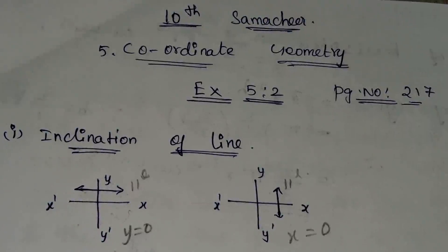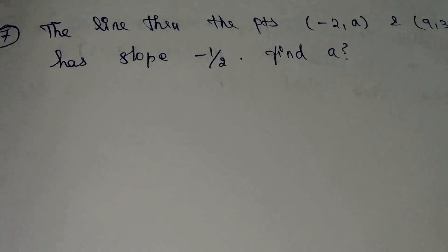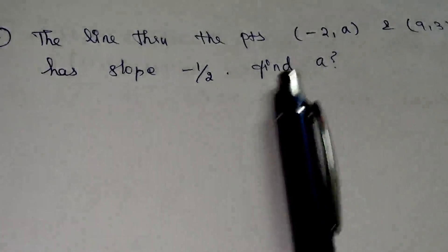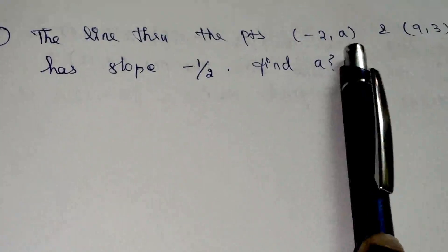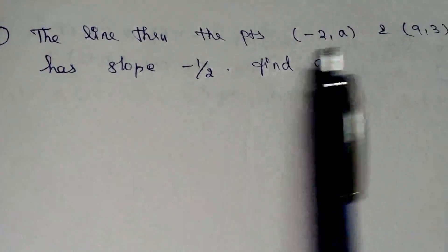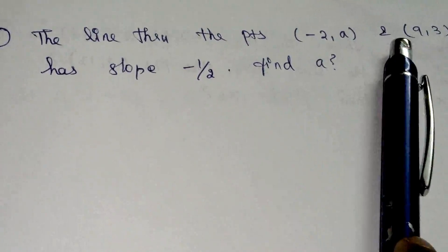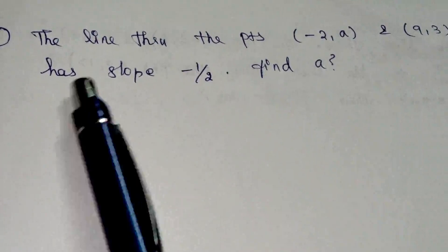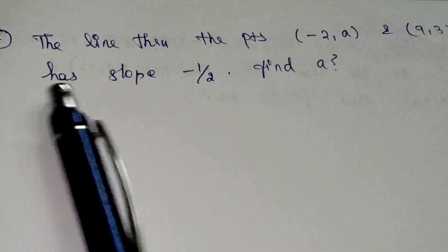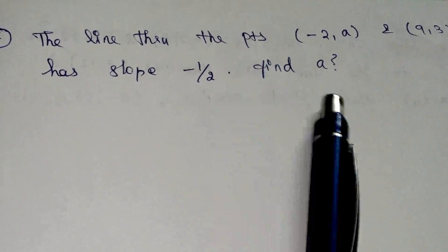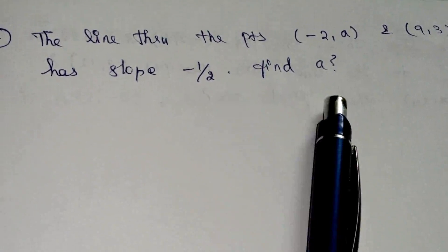It is your book page number 217. So what is the question? The line through the points minus 2 comma A and 9 comma 3. You have a line through the points and the slope is minus 1 by 2.